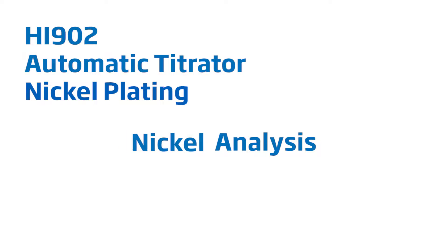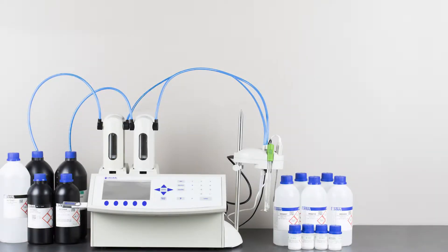Nickel plating bath analysis is easier than ever with the Hanna HI902 Automatic Potentiometric titrator. With the automatic titrator, results are just a button push away.